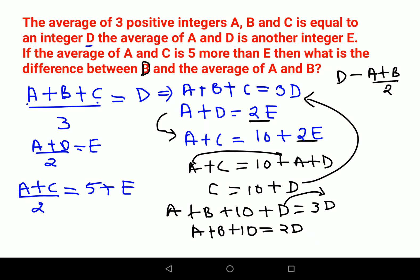Now let's take A+B to the other side. So we will have 10 = 2D - A - B. Since we want (A+B), I can write 10 = 2D - (A+B).